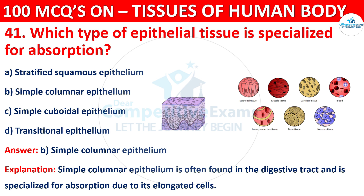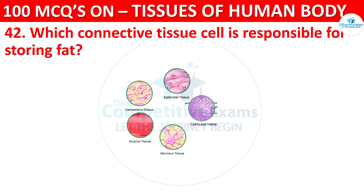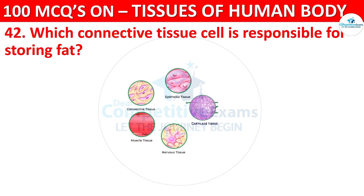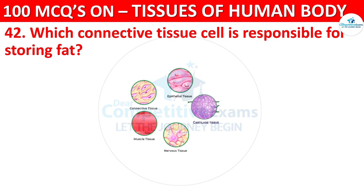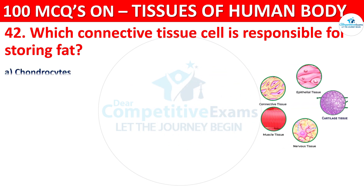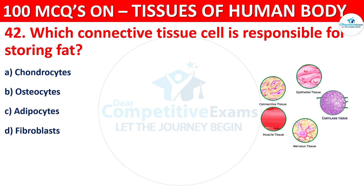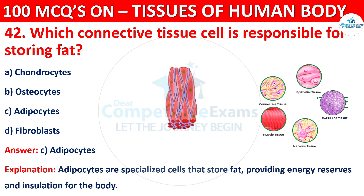Question number 42. Which connective tissue cell is responsible for storing fat? Options are Chondrocyte, Osteocyte, Adipocyte, or Fibroblast. The correct answer is C, that is Adipocyte. Adipocytes are specialized cells that store fat, providing energy reserves and insulation for the body.